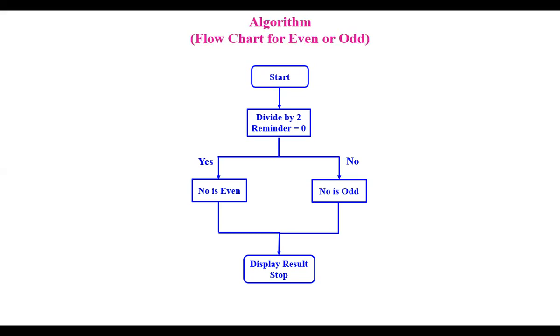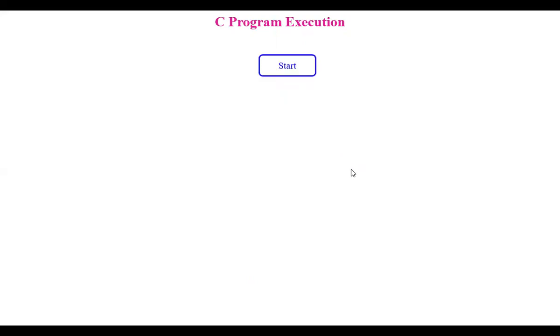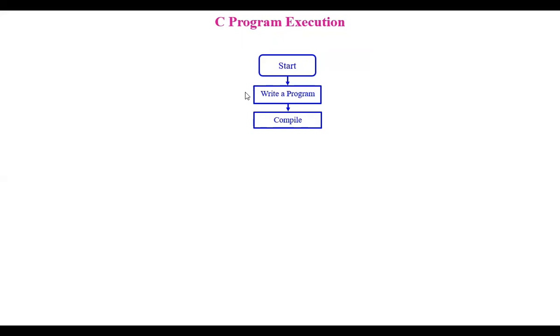Next, let us see the C program execution in detail. You start by writing a program — you take an IDE, an Integrated Development Environment — and write the program. This is the source program. The source file is then given to the compiler, which compiles it.